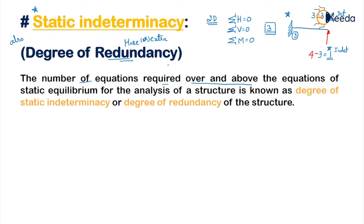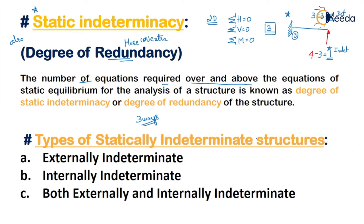A structure can be statically indeterminate in three ways. First, it can be externally indeterminate, denoted DSE. Second, it can be internally indeterminate, denoted DSI. Third, it can be both externally and internally indeterminate. The total static indeterminacy DS is the sum of DSE and DSI.